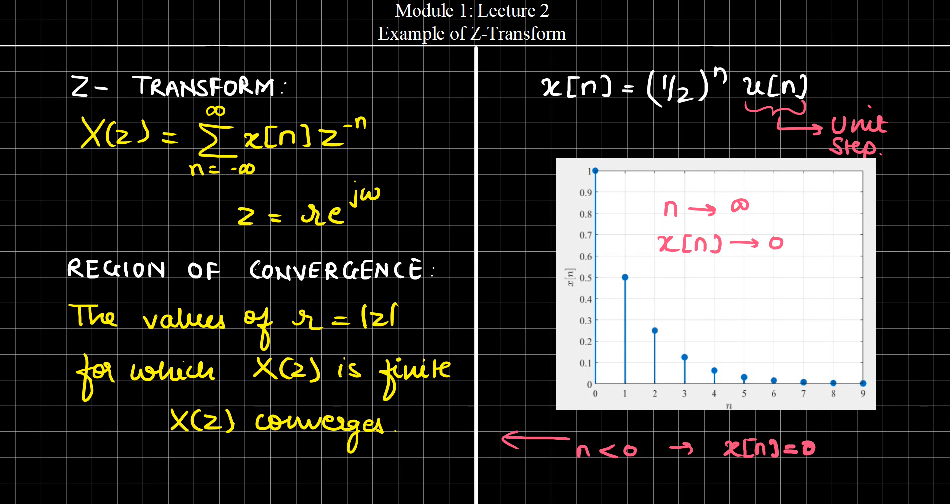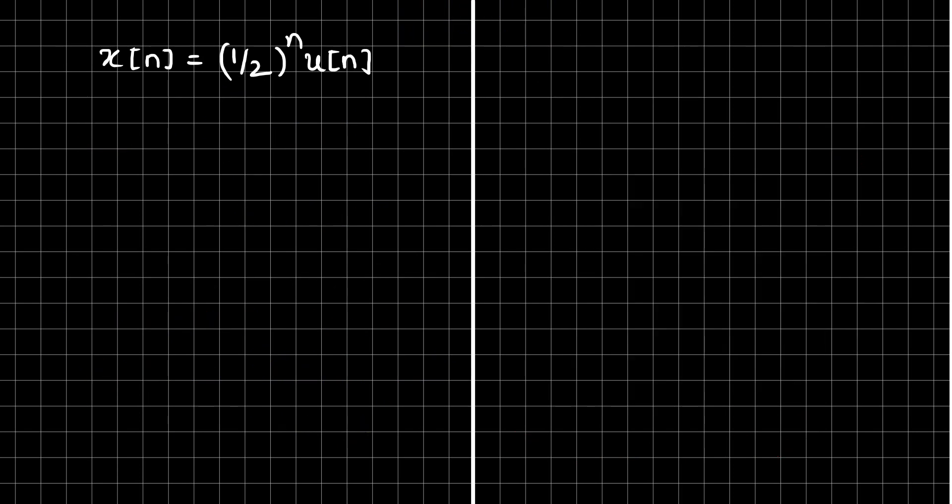This is simply because we have multiplied this 1 by 2 to the power n factor by the unit step signal. Let us try finding Z-transform of this signal.